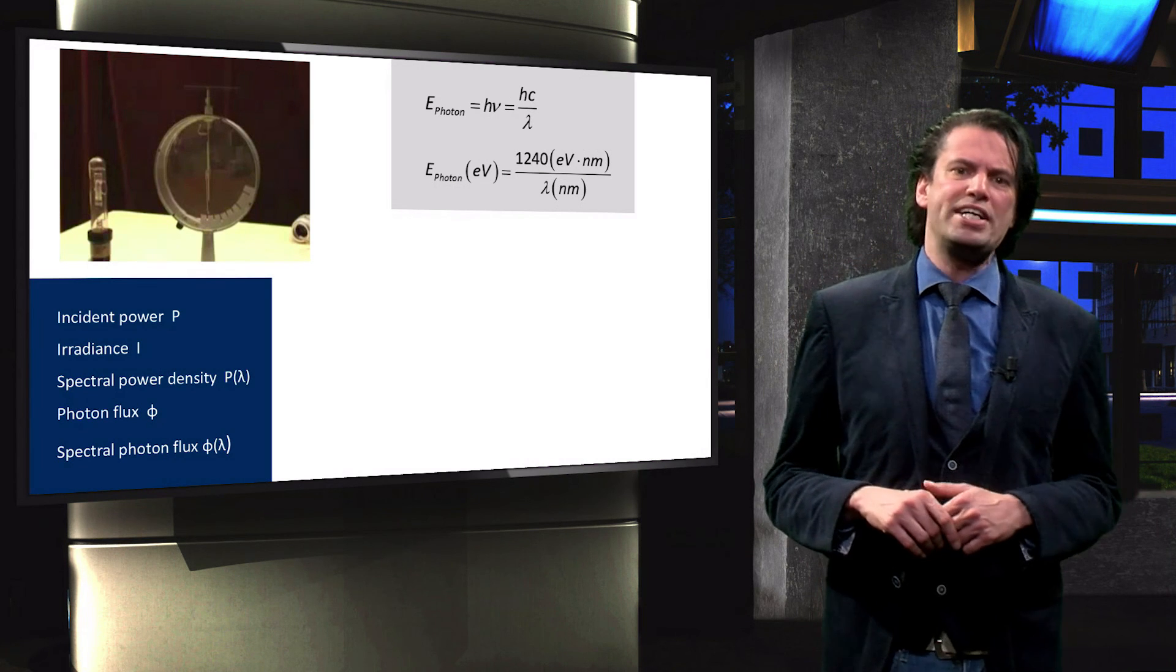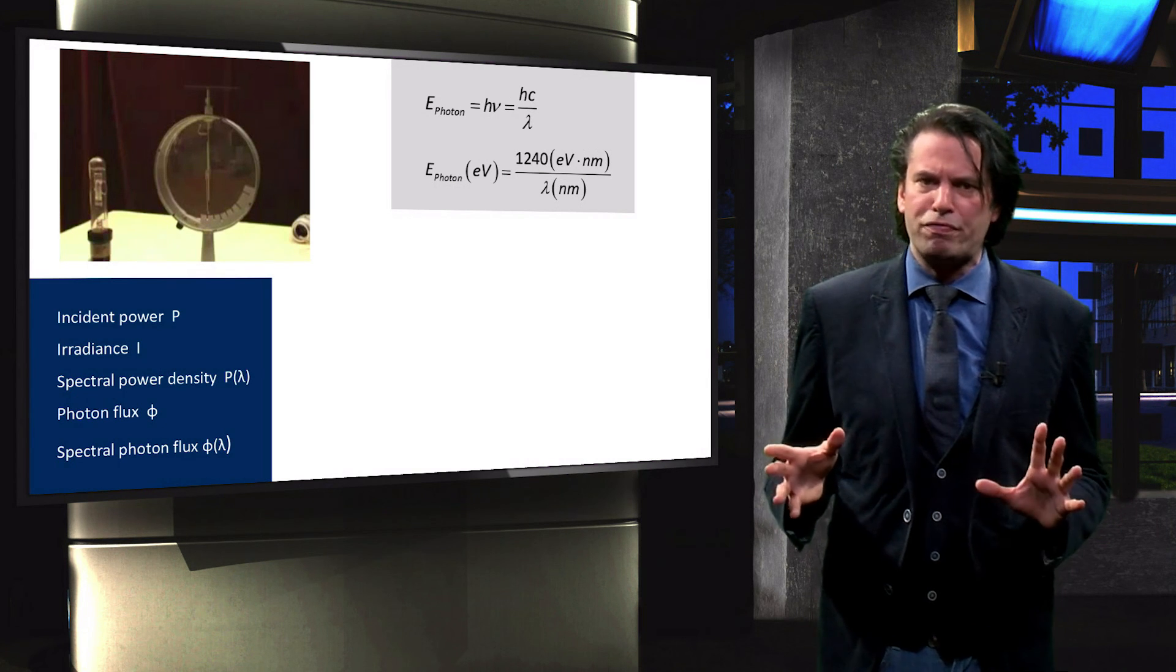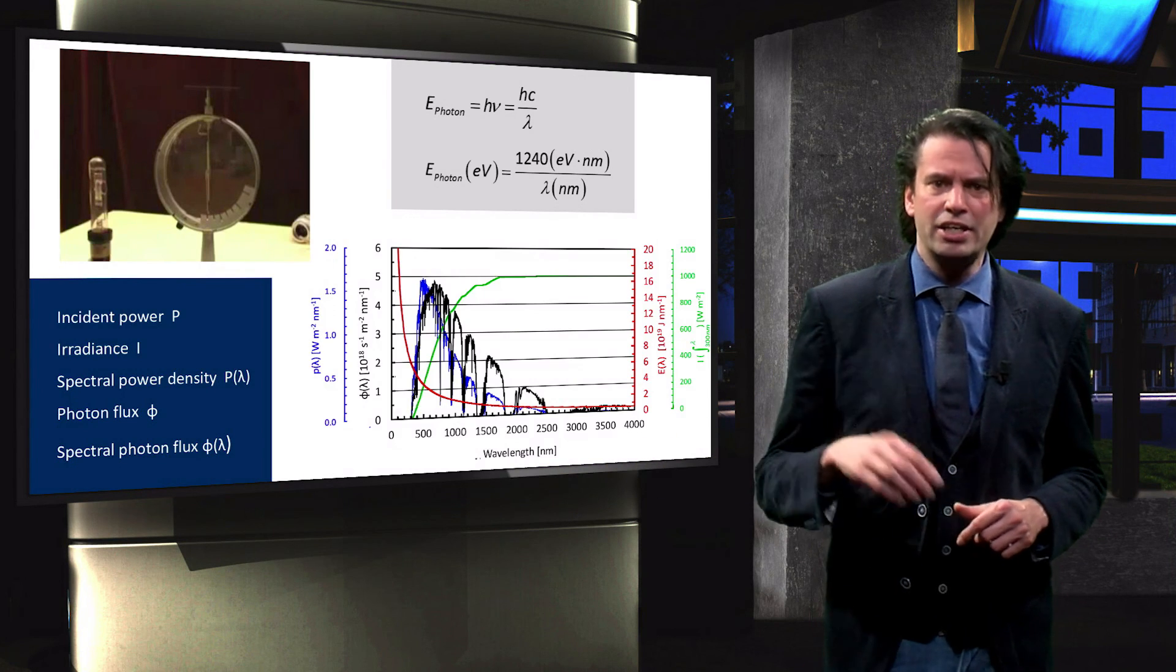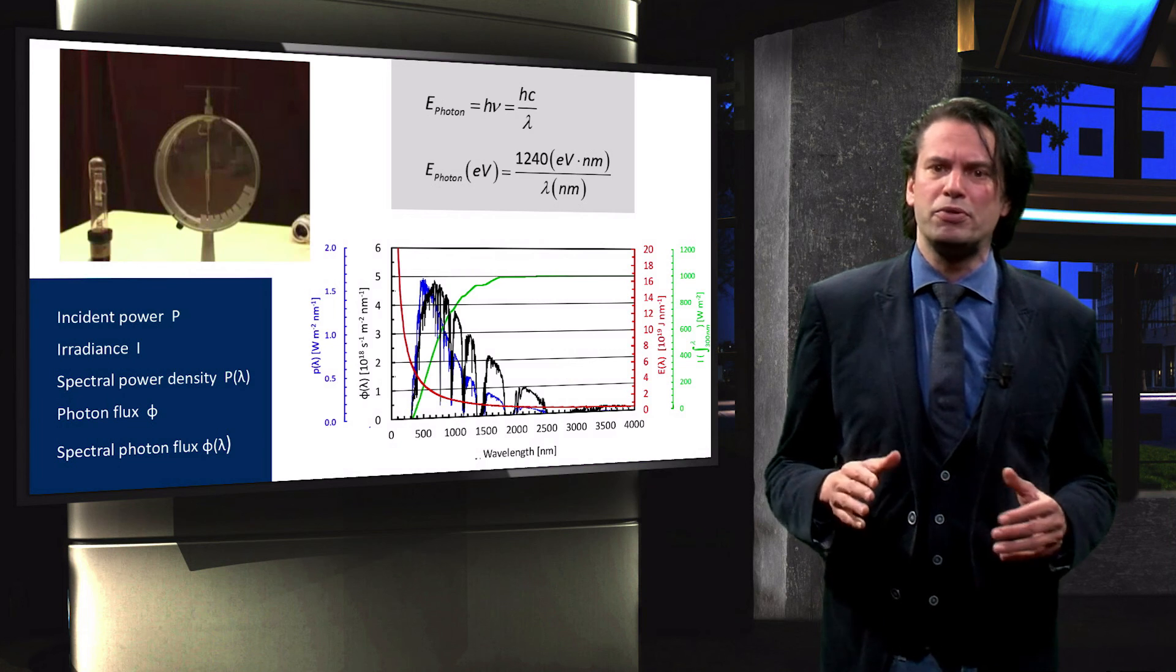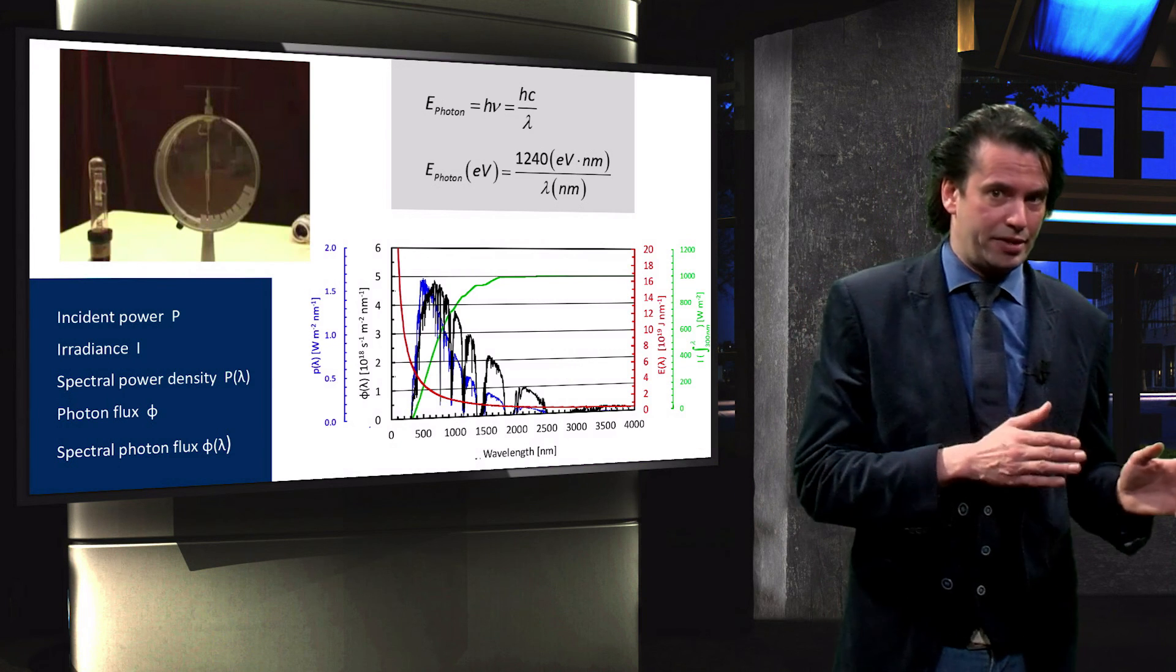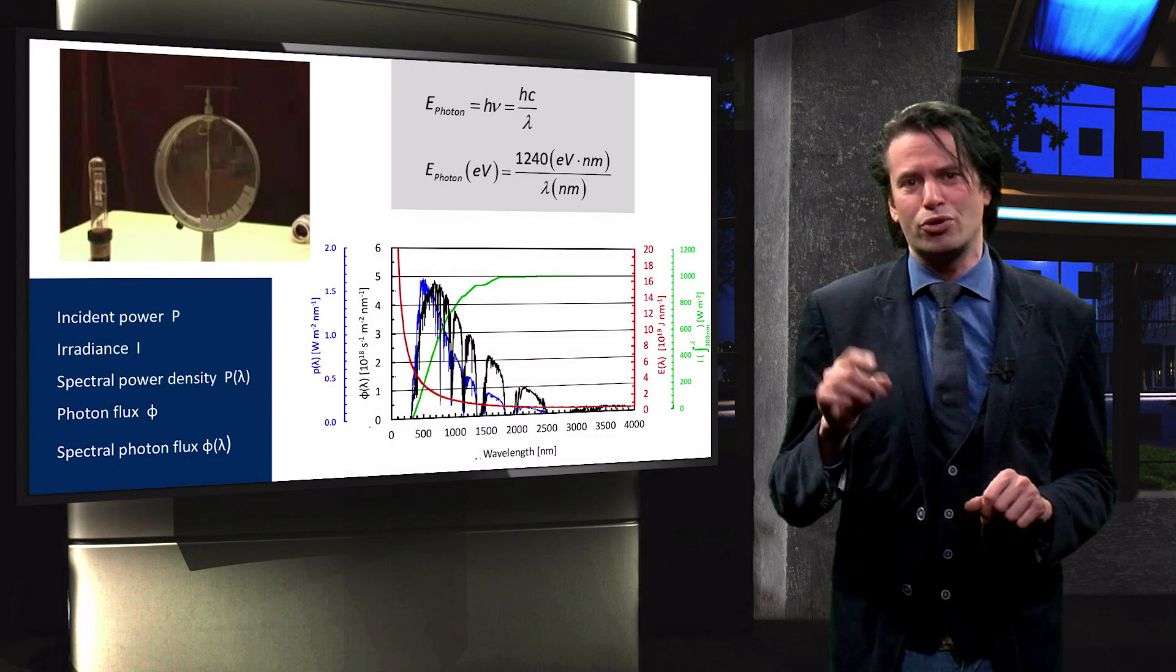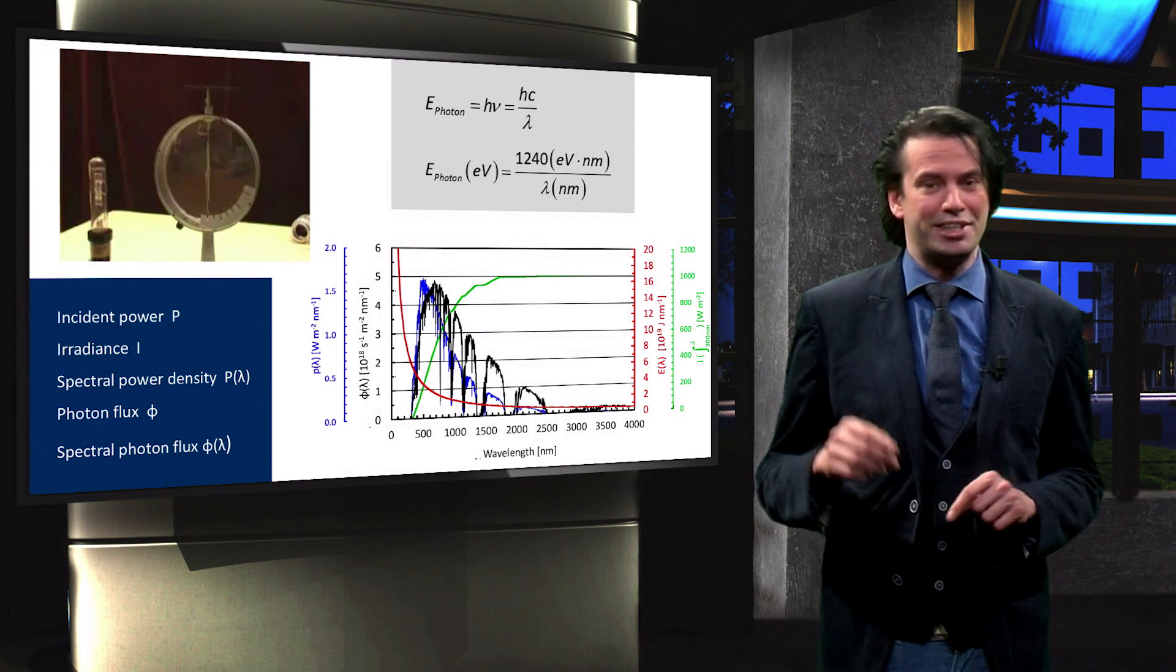We defined a number of ways to describe and quantify the amount of light incident on a surface. Finally, we illustrated the relation between the photon flux, energy and irradiance. We are now ready for the optical losses in solar cell, which we will discuss in the next video.